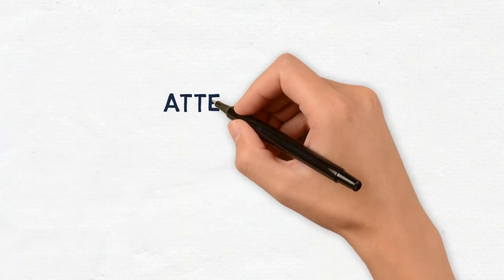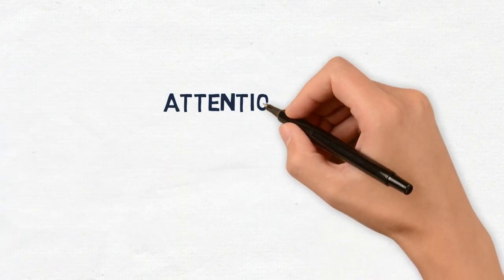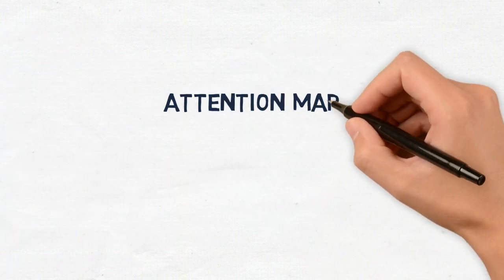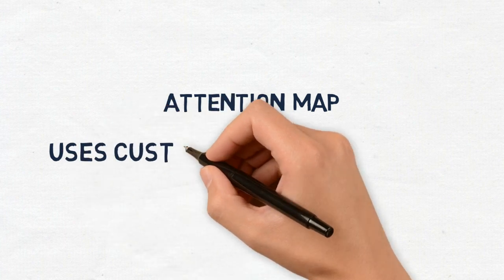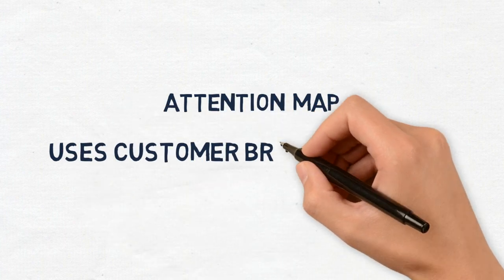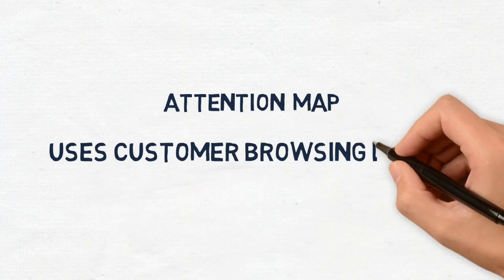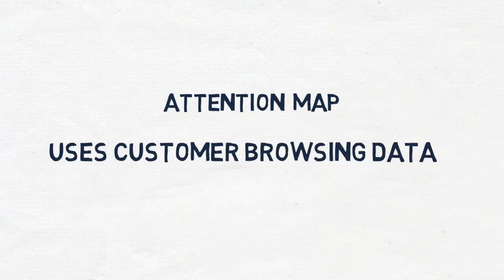Attention mapping uses the customer's browsing data to display which part of the page receives the most attention. It shows areas of the page that are viewed the most, taking into account how far they scroll and how long they spend on the page.